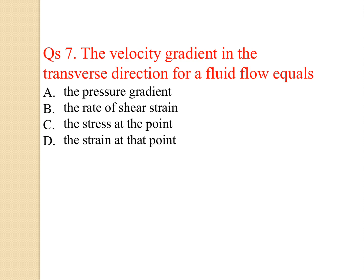The velocity gradient in the transverse direction for a fluid flow equals — (a) the pressure gradient, (b) the rate of shear strain, (c) the stress at the point, (d) the strain at the point. The velocity gradient in the transverse direction for a fluid flow equals the rate of shear strain. B is the answer.